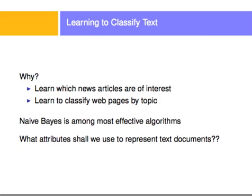There are many more algorithms that are more effective than Naive Bayes, but Naive Bayes is a very good baseline, and it's pretty effective. Some of the things we might ask is what are the attributes that we will use to represent the documents, and we'll shortly see how that works. First, a little bit of intuition of what we're going to do, what the process is going to be.